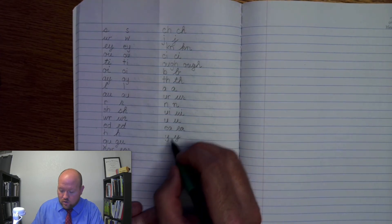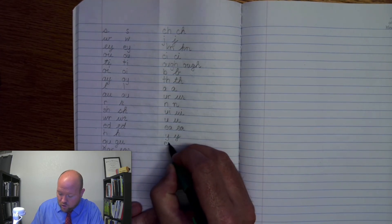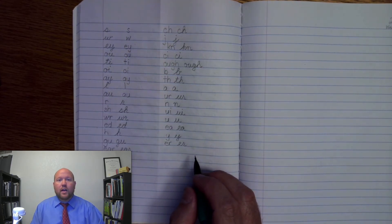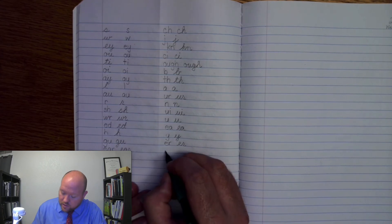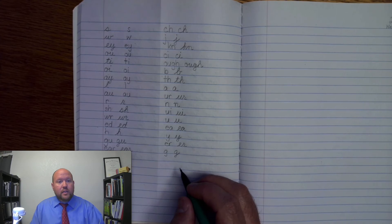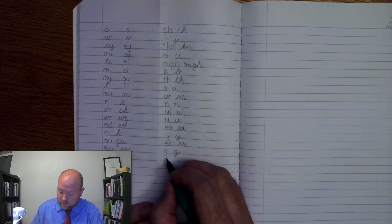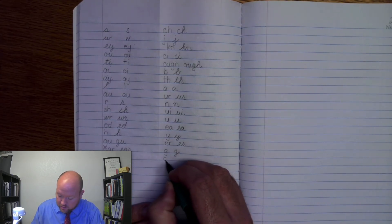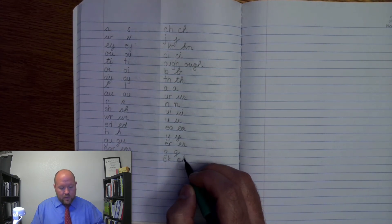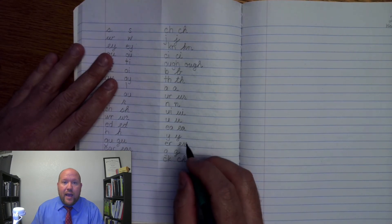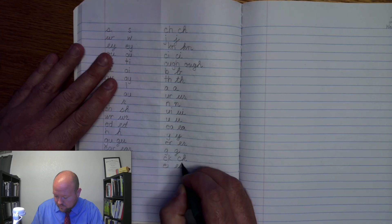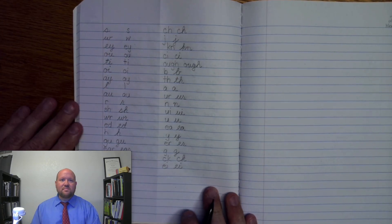Next one. Ur, her. Ur, her. Next one. G, j, g, j. Next one. C, two letters. C, two letters. Next one. E, ay, i. E, ay, i. All right.